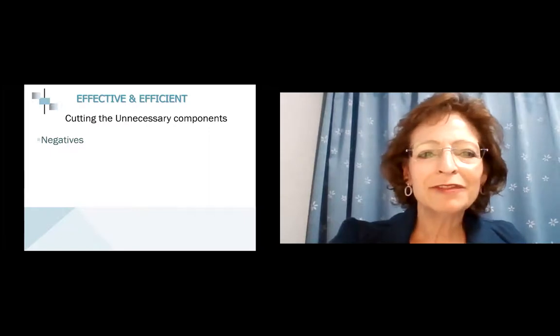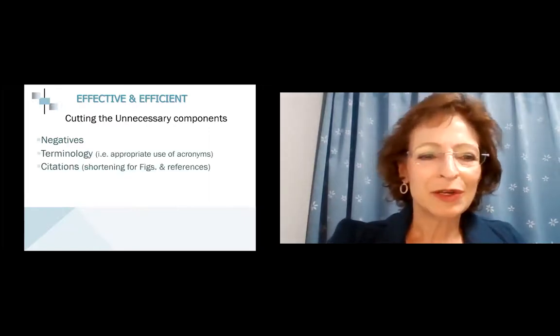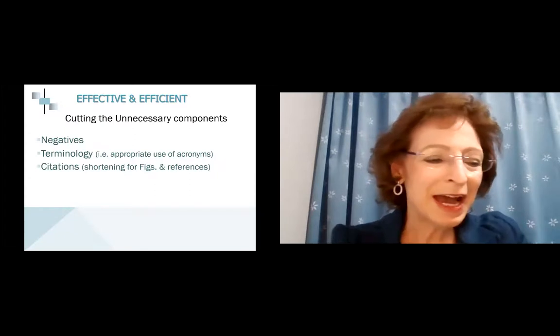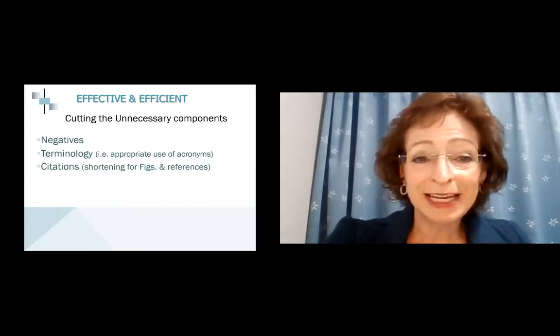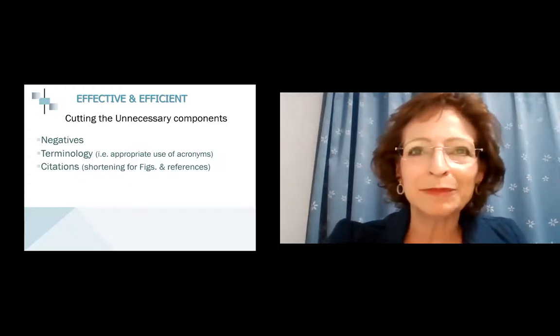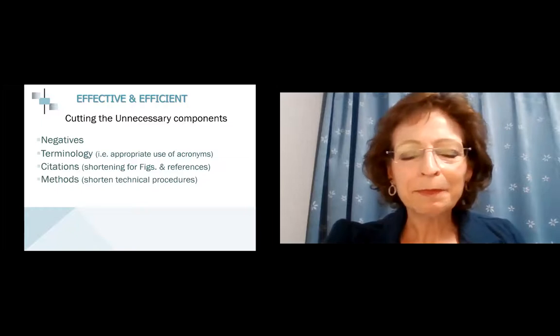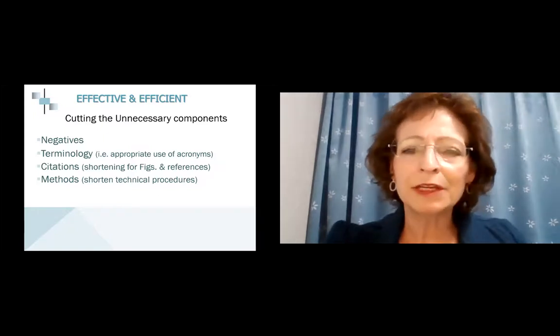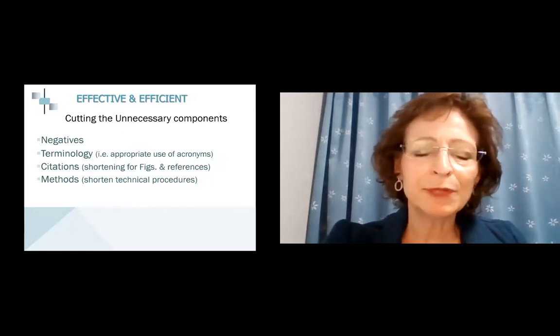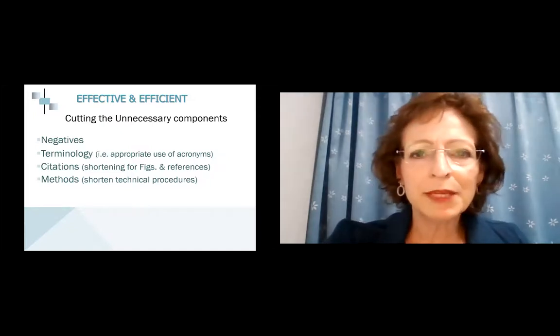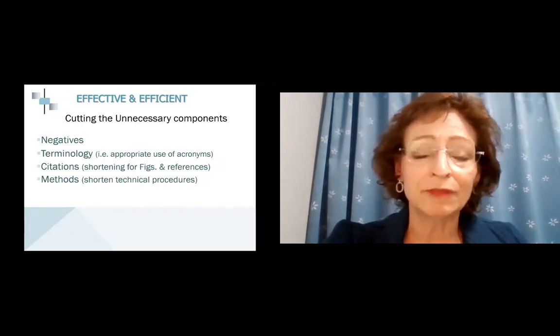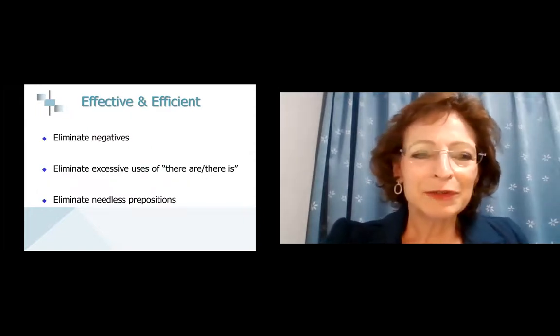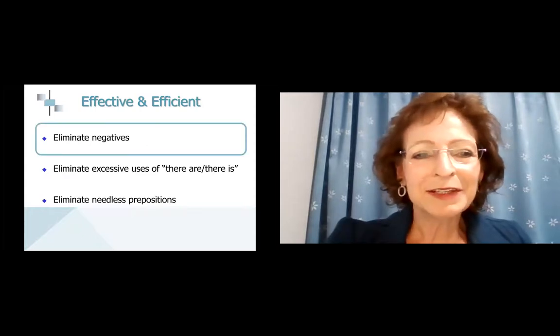How about unnecessary jargon and acronyms? I know acronyms sound important to keep things short, but if there are too many it gets confusing for the reader. Repetitive words and phrases, adverbs that aren't so necessary, and an important point—I realize this happens a lot in Japanese manuscripts—do not repeat the figures in the text. Rather, just briefly summarize the value of the figure. Figures can stand alone; all you need is to mention the results, not all the p-values in the results or abstract. How else can we be effective and efficient? We can cut unnecessary components: negatives, citations, terminology.